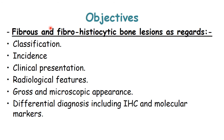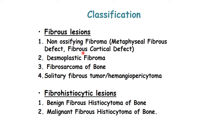Our objectives are to discuss fibrous and fibro-histiocytic bone lesions as regards their classification, incidence, clinical presentation, radiological features, gross and microscopic appearance, differential diagnosis including immunohistochemistry, and molecular markers.